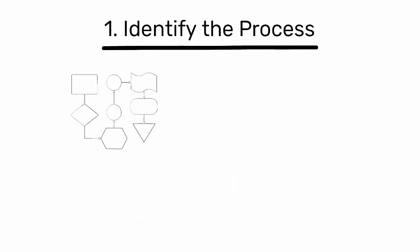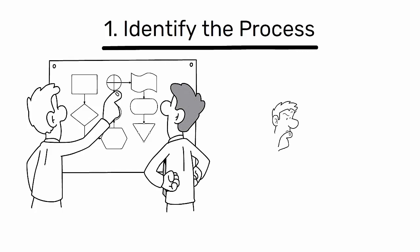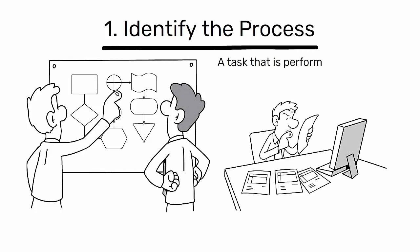1. Identify the process. Start by identifying the process that needs standardization. This could be a task that is performed frequently, has high variability, or is critical for quality or safety.